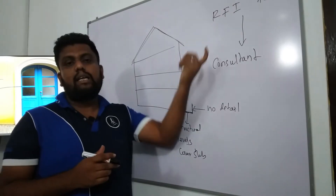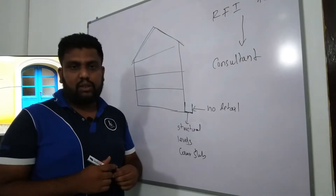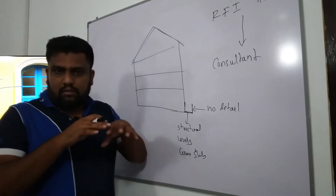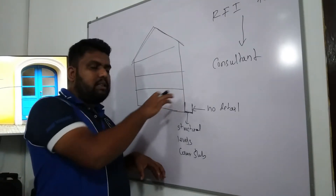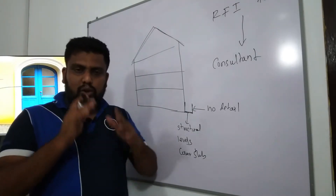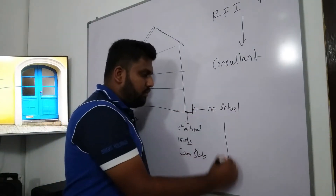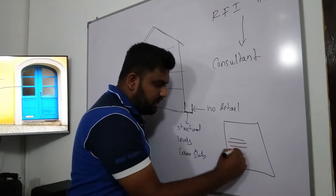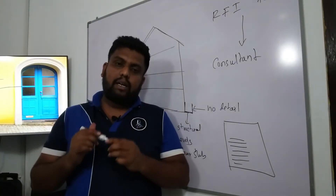Then you will be able to get the full drawing about this drain line. If you don't mention what details you need and just raise the RFI form, sometimes the consultant will give partial information. That's why in the RFI form you must write down everything you need, so you receive a completed drawing.